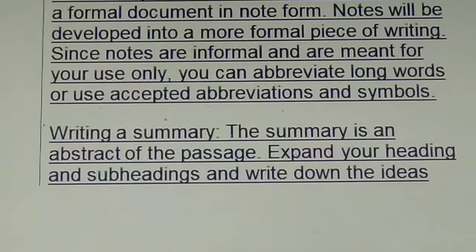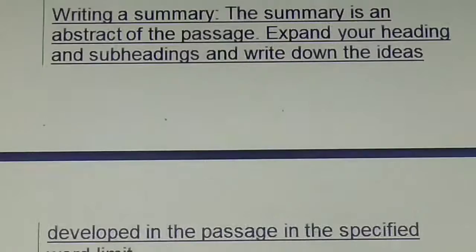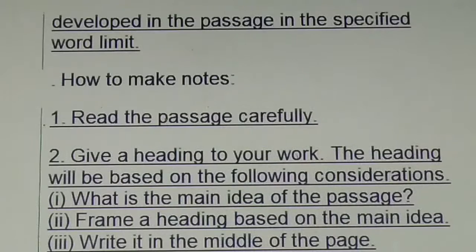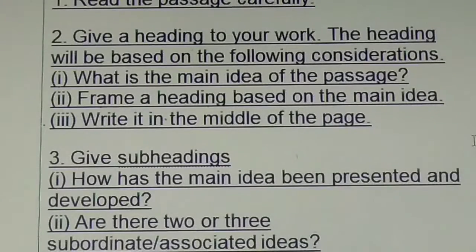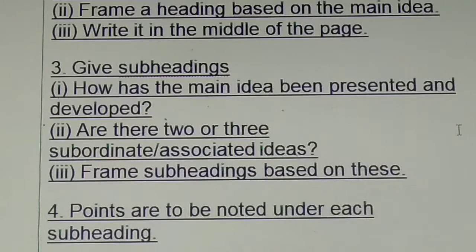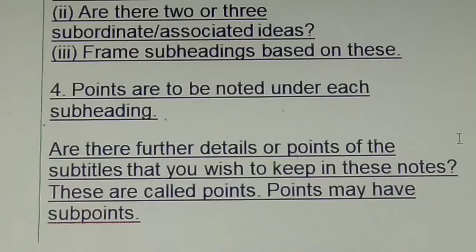Since notes are informal and are meant for your use only, you can abbreviate long words or use accepted abbreviations and symbols. Writing a summary: the summary is an abstract of the passage. Expand your heading and subheadings and write down the ideas developed in the passage in the specified word limit. How to make notes: read the passage carefully, give a heading, then subheadings. Go through it very carefully, children.